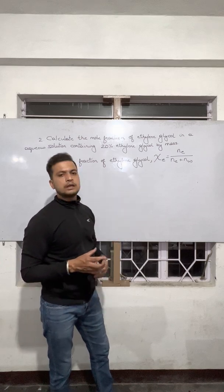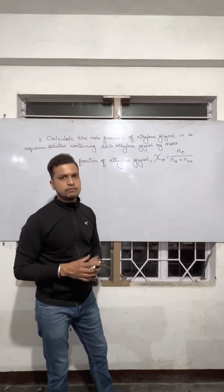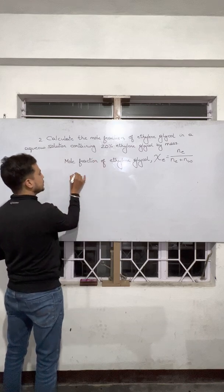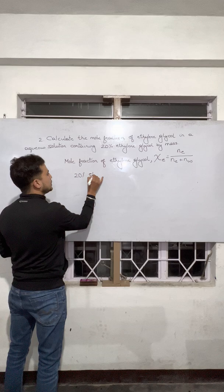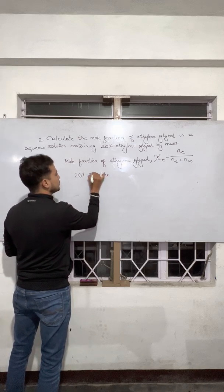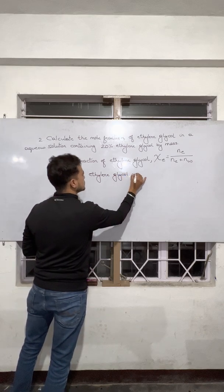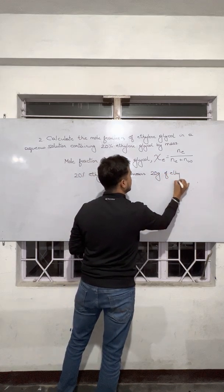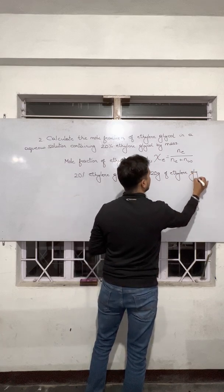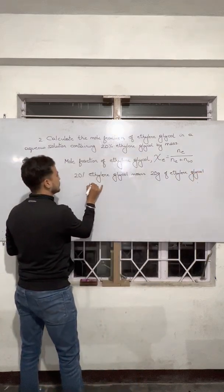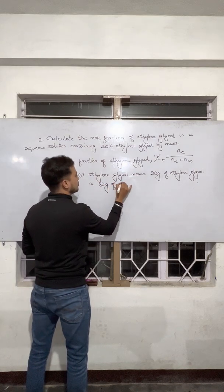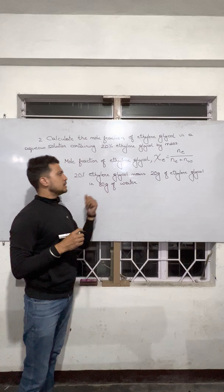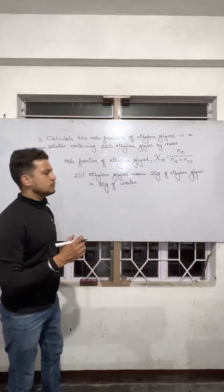What we need to find is basically the number of moles of ethylene glycol and number of moles of water. To interpret the given information: 20% ethylene glycol means 20 grams of ethylene glycol in 80 grams of water. Once we have the mass of the solute and the solvent, finding out the number of moles is not a difficulty.